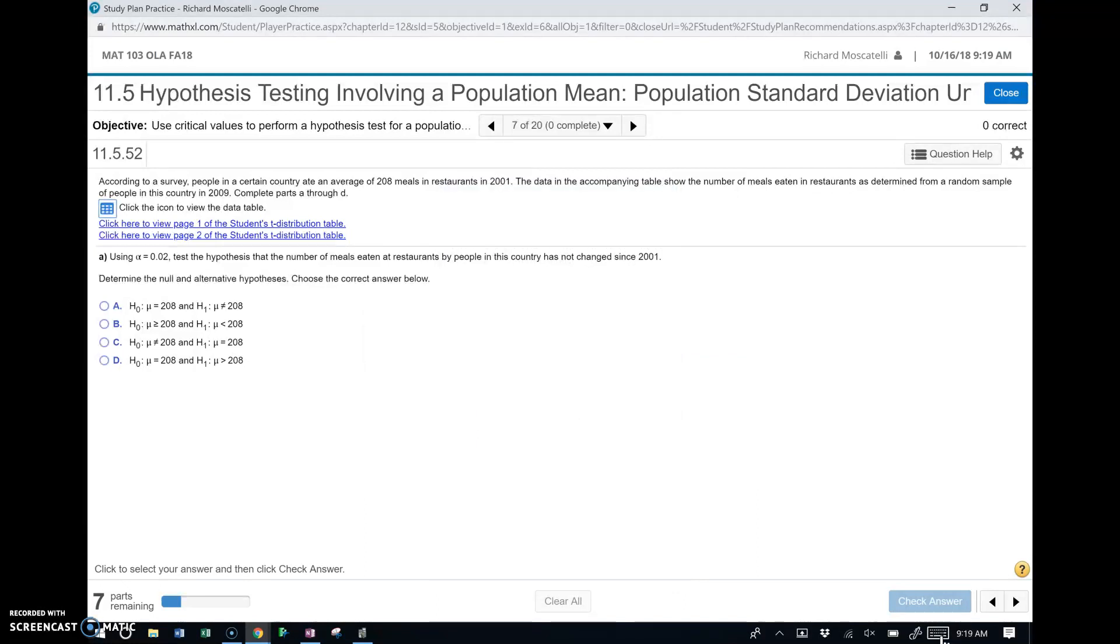Alright, so let's give a look at letter A. It says, using alpha equals 0.02, okay, it's a 2% significance level, test the hypothesis that the number of meals eaten at restaurants by people in this country has not changed. Alright, so currently they're saying in the past it's been 208 meals. And if it hasn't changed, that means it's still 208 meals. So what we're going to test that against is that it's different than 208 meals. So for the null hypothesis, we'll say that the population mean mu is 208. And then for the alternative hypothesis, we'll say that the population mean is something different than 208. So this would be a two-tailed test. So if we look at the multiple choices here, that looks to be like it's letter A. Alright, let's check our answer. Fantastic.